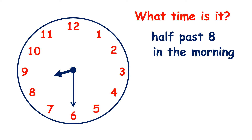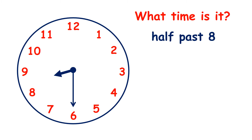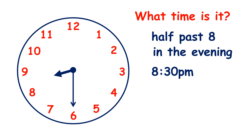It might not be half past 8 in the morning — when else might it be half past 8? It might be half past 8 in the evening. We usually say it's the evening if it's after dinner but before we go to bed. So if it's half past 8 in the evening, would we say 8:30 a.m. or p.m.? We say 8:30 p.m., because it's after midday but before midnight.